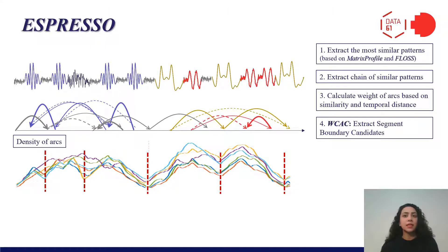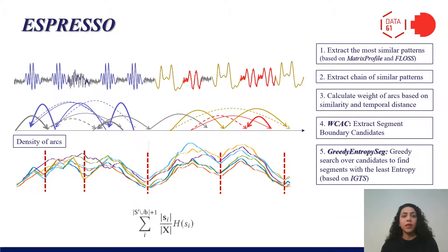Time steps with less density of crossing arcs will be selected as segment boundary candidates. We borrowed the idea of information gain segmentation from IGTS. However, instead of dynamic programming, we use a greedy search across extracted segment boundaries to find the segment with the minimum entropy. At each step, we select the boundary candidates which minimize the given entropy function.